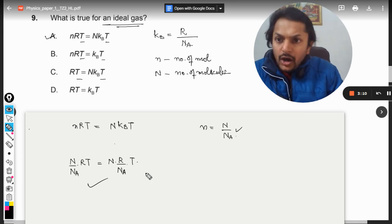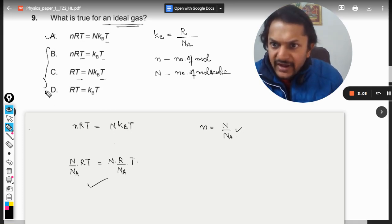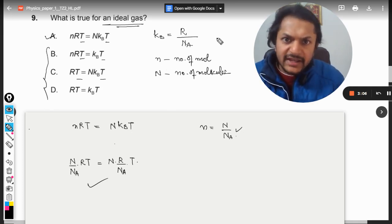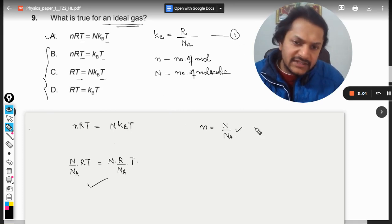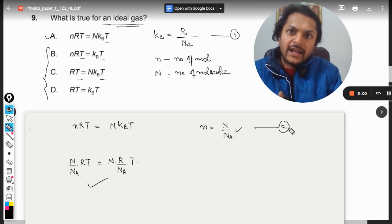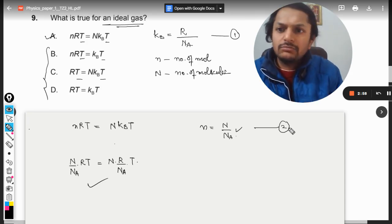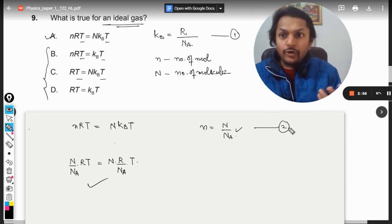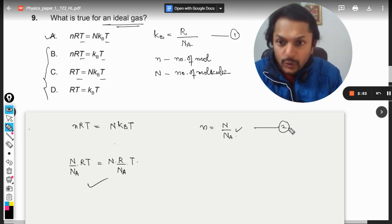Accordingly you can keep on substituting values here for these two things. This is number one and this is number two thing which we have to use to prove this. And you will eventually come out to know that B and C and D are all wrong. So this is how we do it.